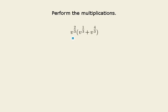Perform the multiplications. We have here v to the two-thirds, times a sum, v to the one-third plus v to the four-thirds.